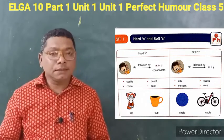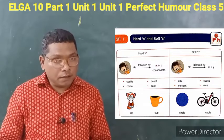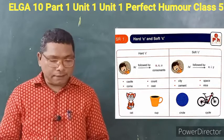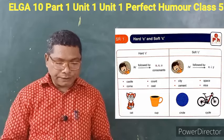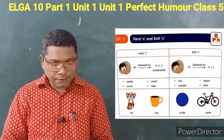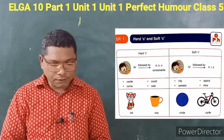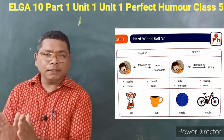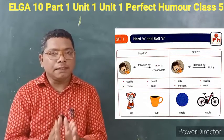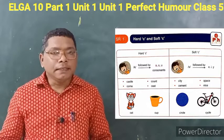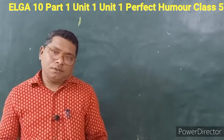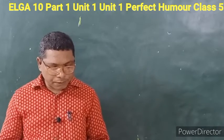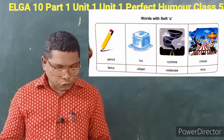Hard C is the use of K, and soft C is the use of S. City, space, cement, nice, circle, cycle — all of them the sound is S but the spelling is C. That is why they are called soft C.